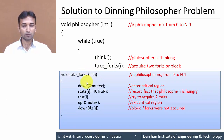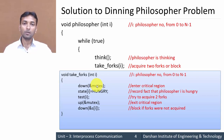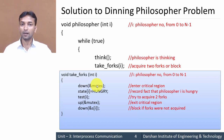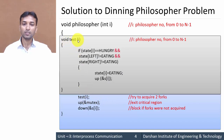In void take_fork(int i), i is the number of the philosopher from 0 to N-1. First, down(mutex) is called — the philosopher wants to enter its critical section, so it downs the value of mutex so that other philosophers cannot access the critical section at that time. Then state[i] = HUNGRY — the state of that philosopher is changed to HUNGRY. Then test(i) is called — the philosopher is trying to acquire two forks, so void test(int i) is invoked.